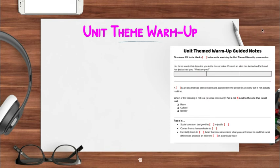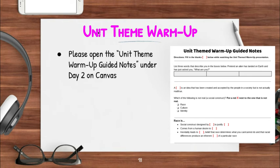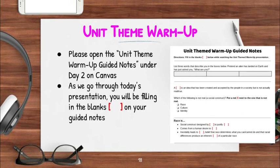For the next portion of the course, we're ramping up to get started on the actual work for our unit — race, culture, and identity. In order to do that, please open the unit theme warm-up guided notes under day two on Canvas. It's a Google Doc. As we go through today's presentation you will be filling in the blanks — the red brackets — on your guided notes. You can either delete the brackets and put in the word or words that need to go in there, or you can just type the words between the brackets.